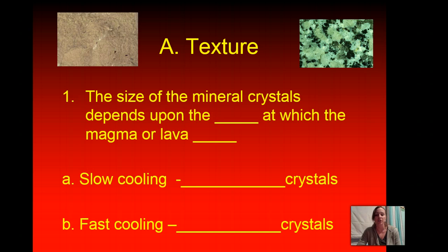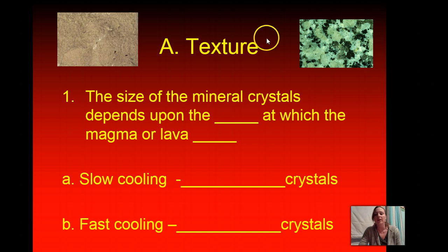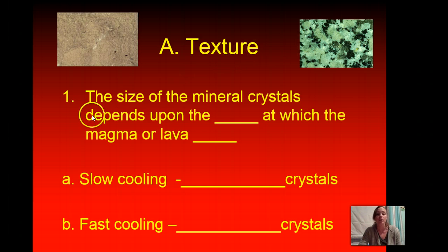Let's talk about texture. Texture is the size of the mineral crystals. If you look at these two pictures on either side, some have obvious black and white specks, and others look more like all the same color. The one that's all the same tan color, we would say has fine to small crystals because they're so small the color almost blends together. Whereas on the right-hand side, we see larger crystals — the biotite mica and potassium feldspar — those are known to have a coarse or large crystal.